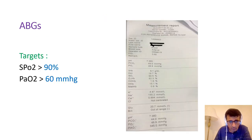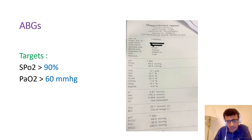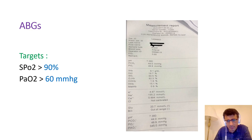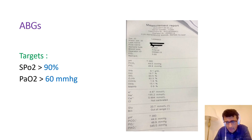Regarding arterial blood gas in patients with COVID-19: the hallmark of ABG in those patients is hypoxemia. It is extremely rare to find hypercapnia due to COVID-19 unless there is another reason for CO2, such as a background chronic illness, or if the patient has severe intractable ARDS — by the end, there will be a CO2 element as well. But commonly, you will find hypoxemia in those patients.